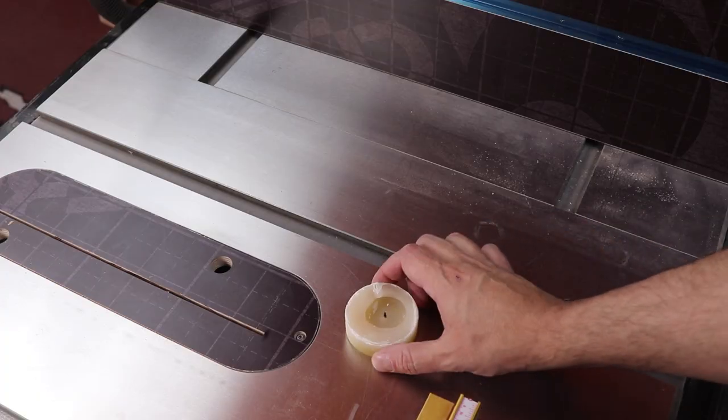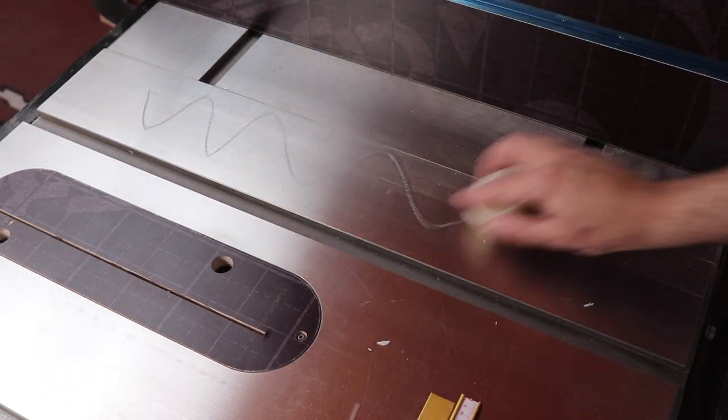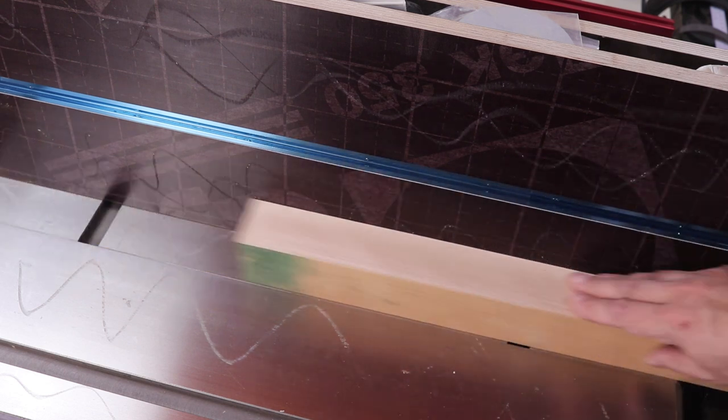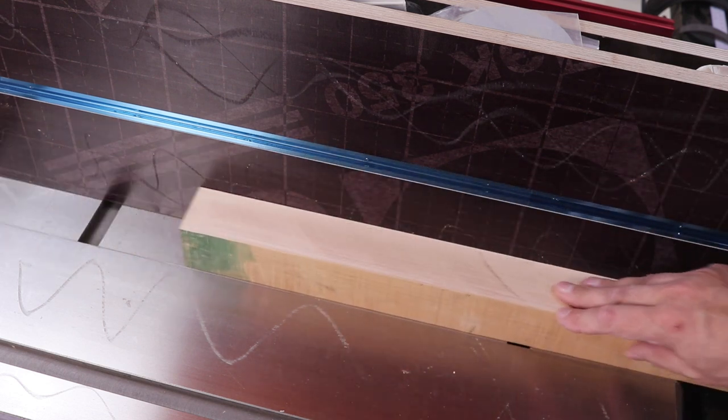This is a bonus tip for this episode. Get some candle wax and spread some on your table saw top and on the fence, and enjoy silk-like wood movement on your table saw.